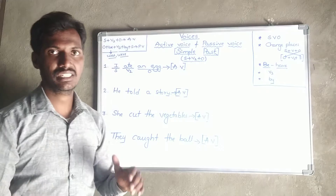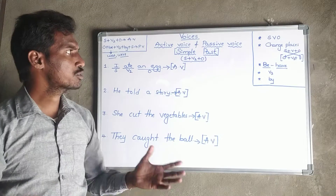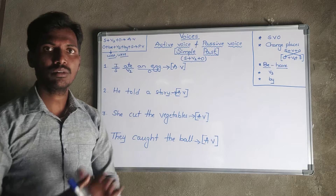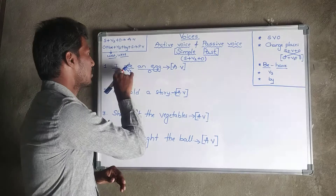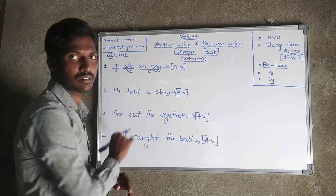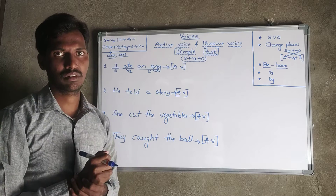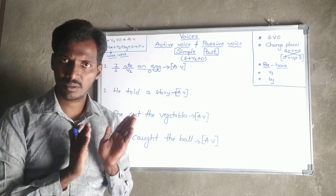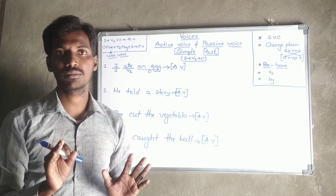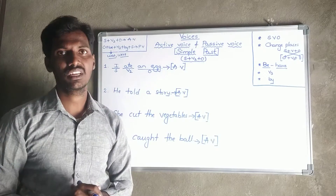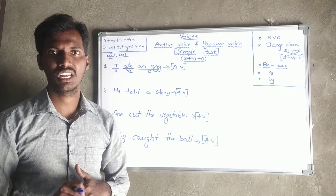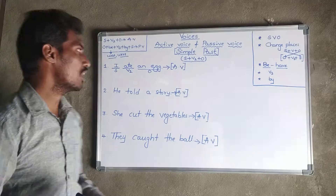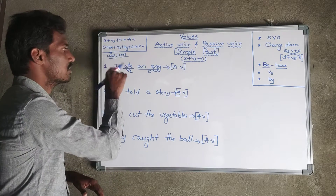What is the next step? Change places. We have to change the places of subject and object in the passive voice. The subject of active voice goes to the object position in passive voice, and the object of active voice goes to the subject position in passive voice. Next, use proper B-forms related to the tense, must use V3 which is the past participle, and use the preposition 'by'. So now convert the statement into passive.